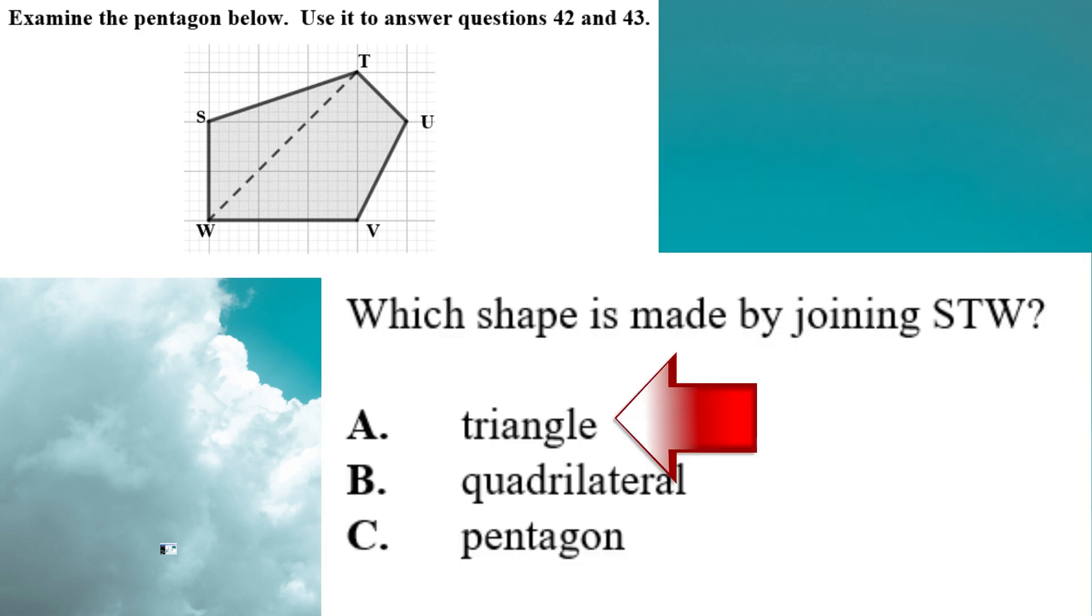Next question, same pentagon. This time, the question is, which shape is made by joining S, T, W? So you look on the pentagon and it might be easier for you to use your finger to form that line, to form that shape. You go from the S to the T to the W. And the shape that is made is the triangle because you're going from point to point to point, three points. It's not a quadrilateral because it is not four sided.